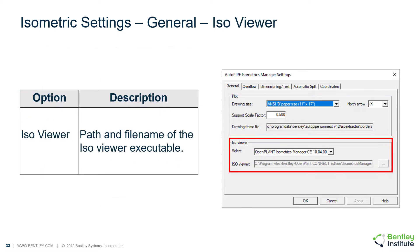The ISO viewer section is used to point to the path and file name of the ISO viewer executable. The browse button can be used to find the ISO viewer executable, and the selection will be saved to the stress ISO INI file.